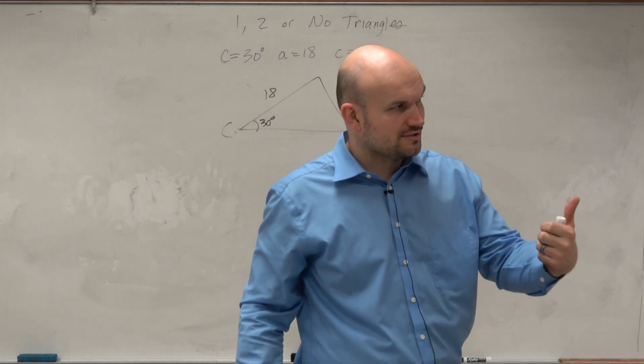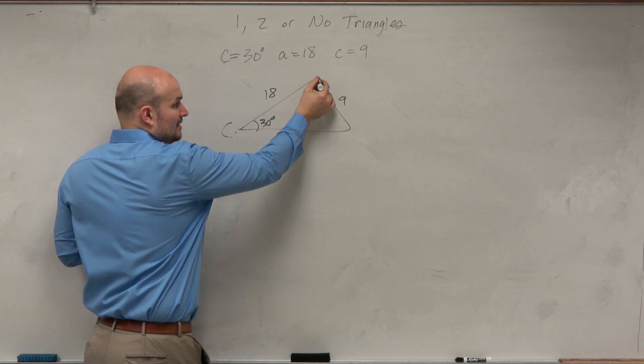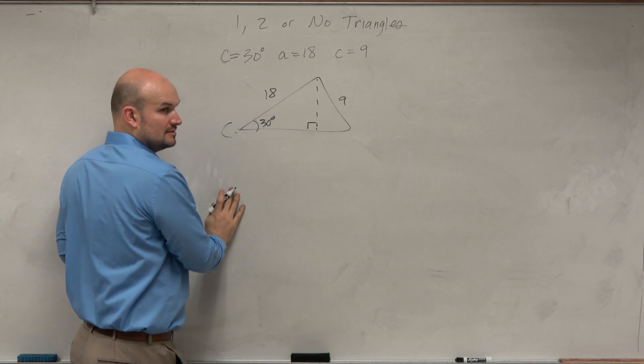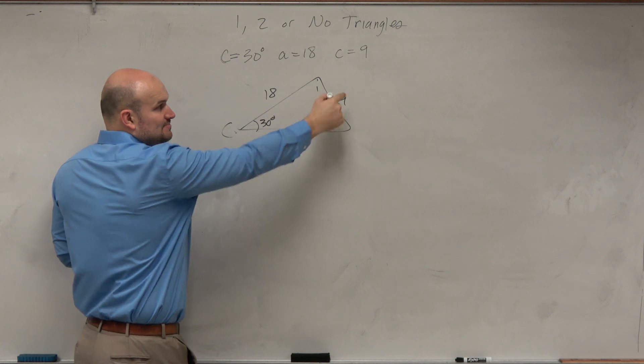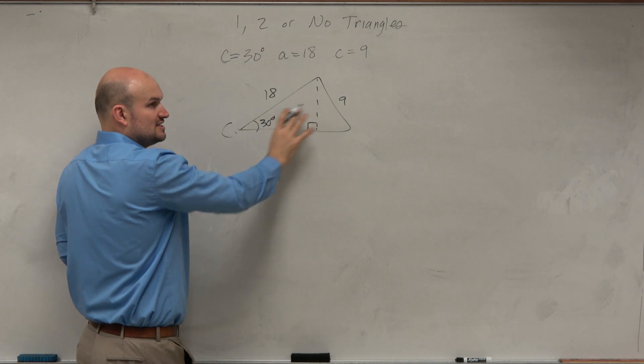So if I'm trying to determine one, two, or no triangles, I got to figure out one way I could do this - I could figure out what the height is. I know if the height is bigger than this side, then no triangle exists. So let's figure out the height.